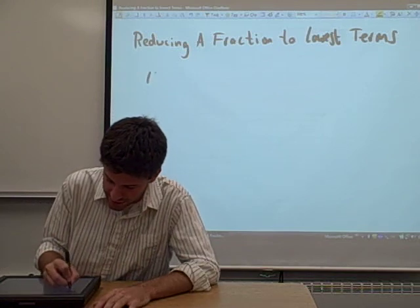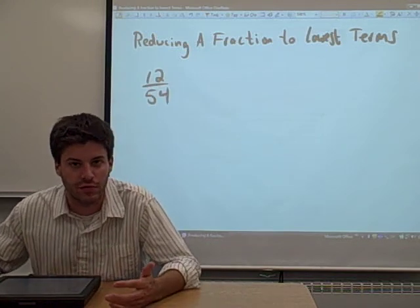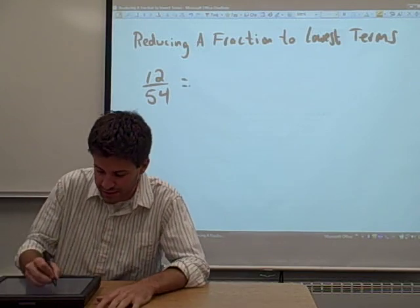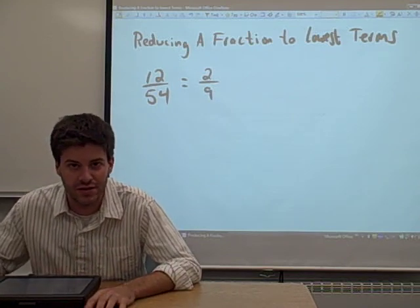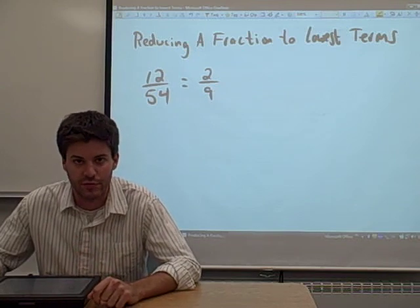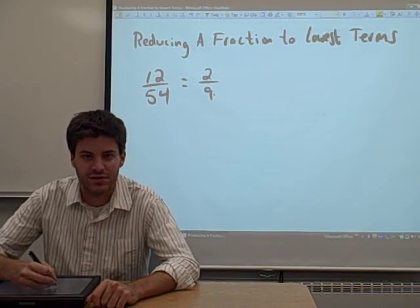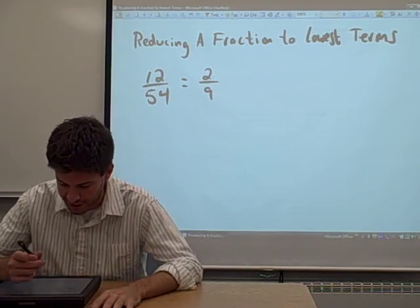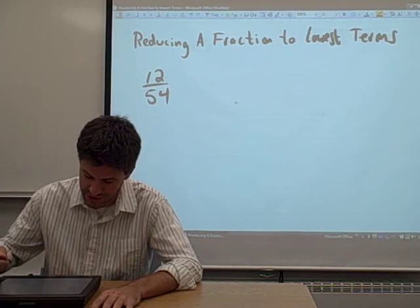So what that means is, for example, we could take this fraction 12 over 54 and do a little bit of work on it. We'll talk about what that work is in a minute. We could reduce this thing so that the numbers in the fraction are much smaller. In this case, 12 over 54 equals 2 ninths, and the 2 and the 9 are the smallest whole numbers that we could possibly get in this fraction. But you might be wondering how we can actually do that, so let's give it a shot.